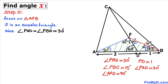Now let's focus on triangle APB. This is an isosceles triangle since angle PAD is 30 degrees and angle PBD is 30 degrees as well. Therefore we conclude that side lengths AP and BP are equal in length.